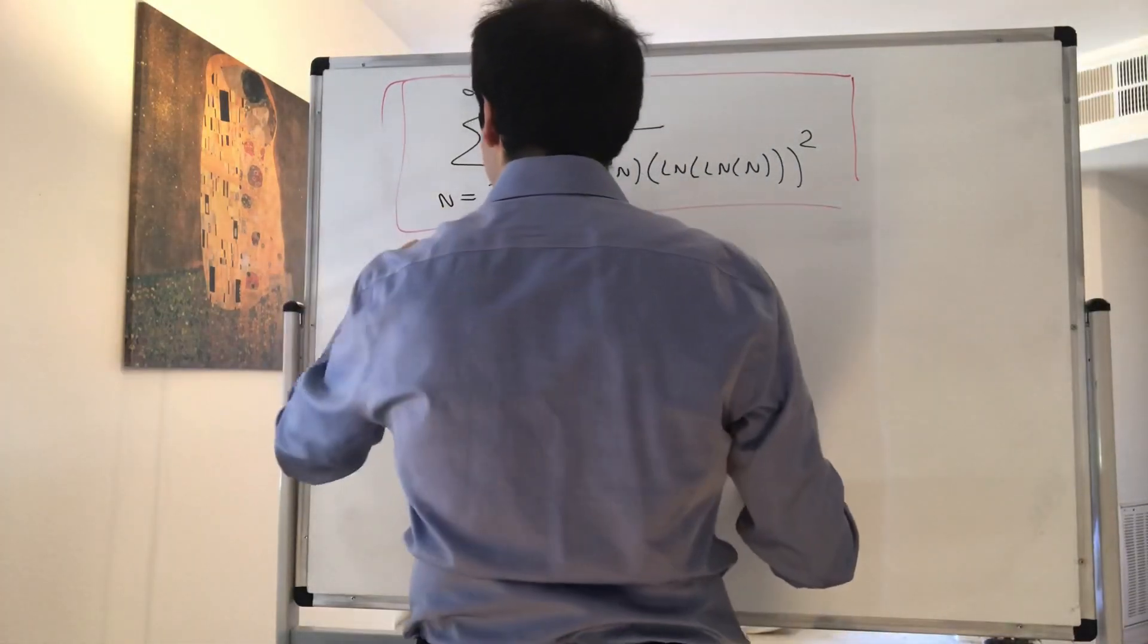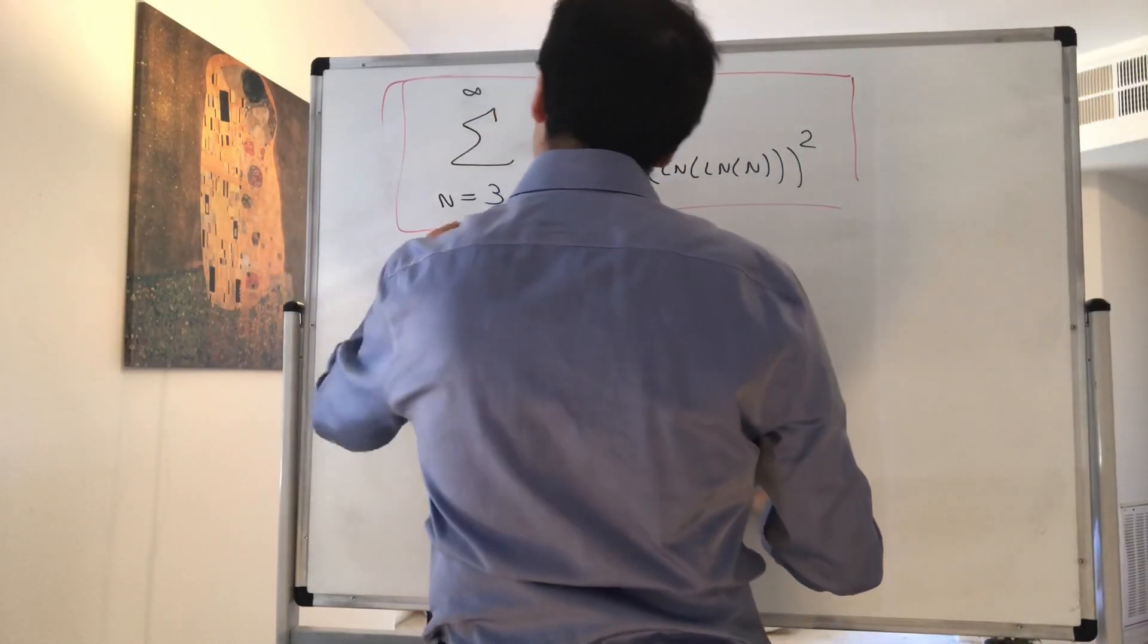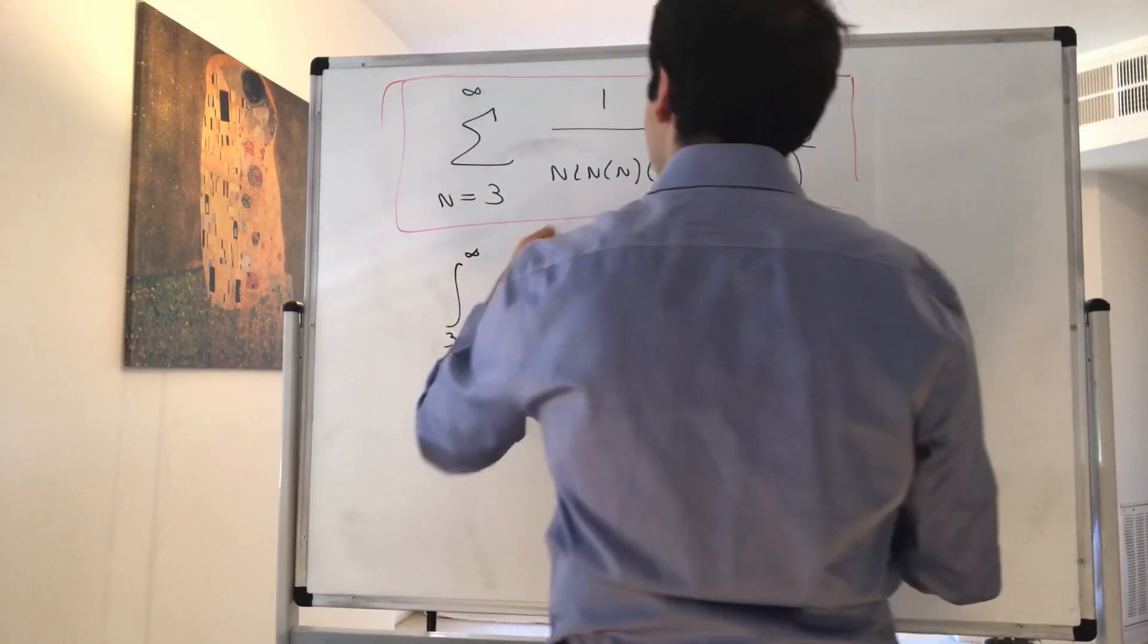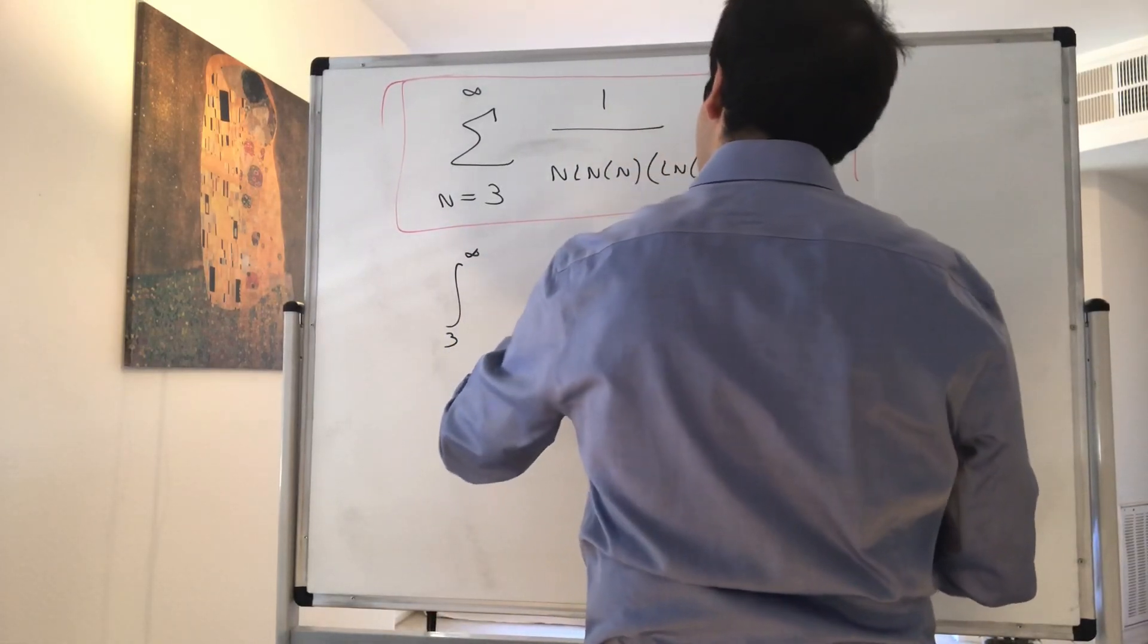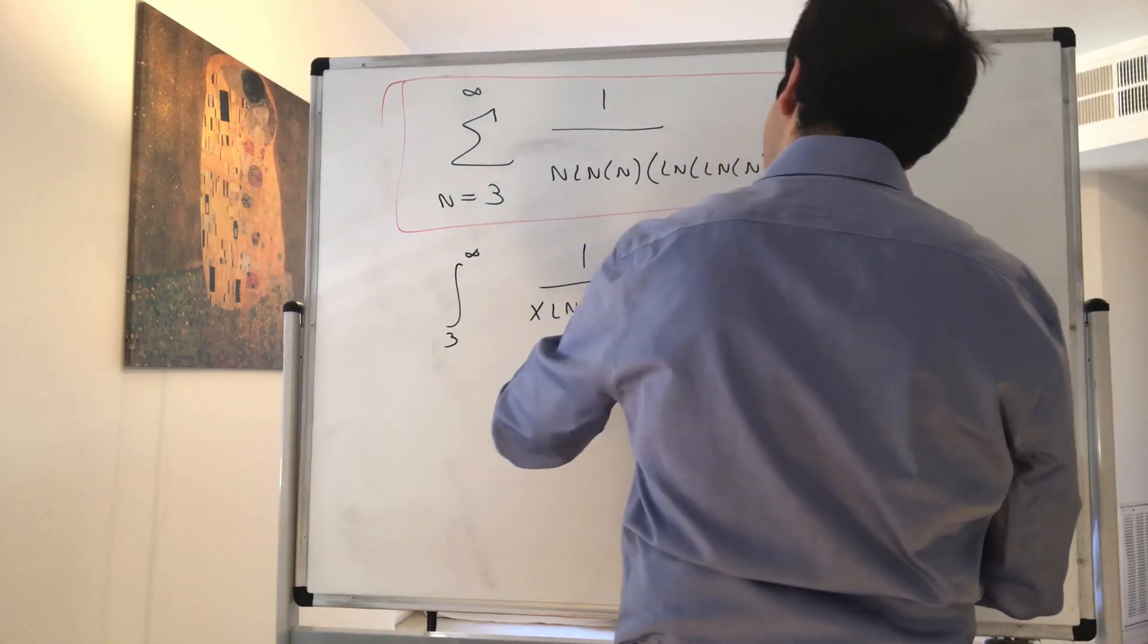And again, first method, let's do the integral test. So let's calculate the integral from 3 to infinity of 1 over x ln of x ln of ln of x squared.